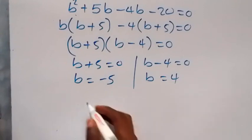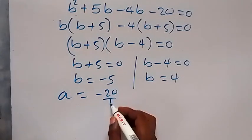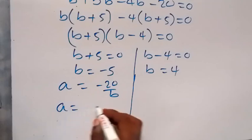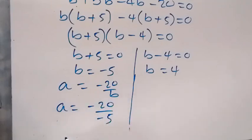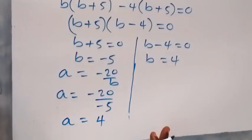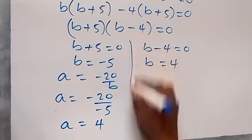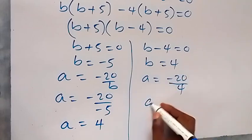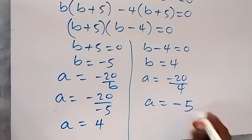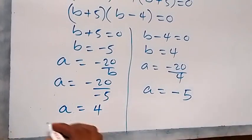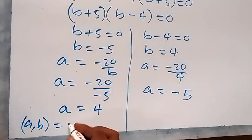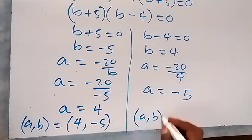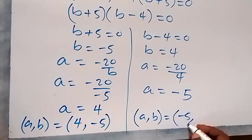Using the relation a equals minus 20 over b: when b equals minus 5, a equals minus 20 over minus 5, which is plus 4. When b equals 4, a equals minus 20 over 4, which is minus 5. So the solutions are: (a, b) equals (4, minus 5) and (a, b) equals (minus 5, 4).